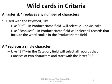For example, if I typed in Like "C*" — with quotes around it — as a criteria in the QBE grid under a field called product name, it would select any record that began with a C in the product name field. So, for example, it would select C, or cookie, or cake — any field that began with C.